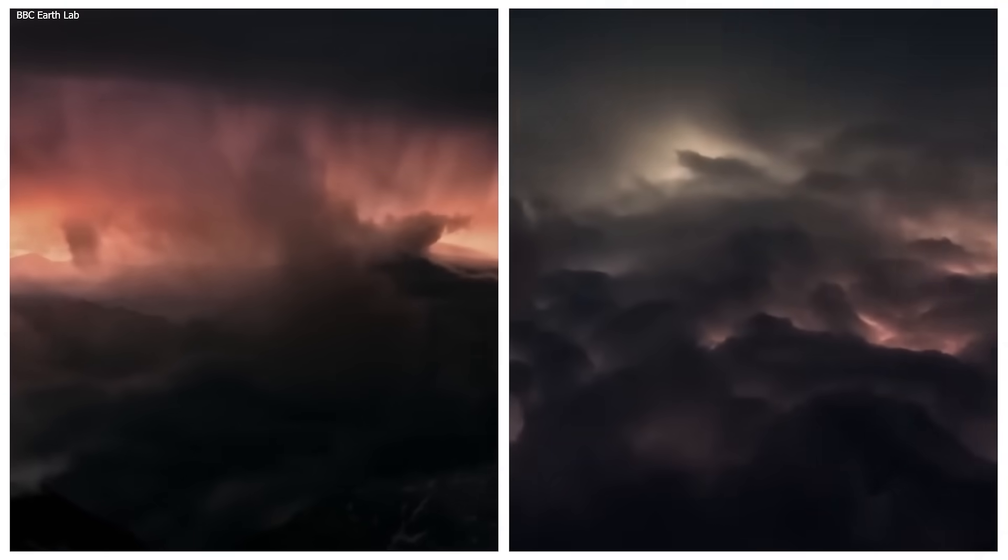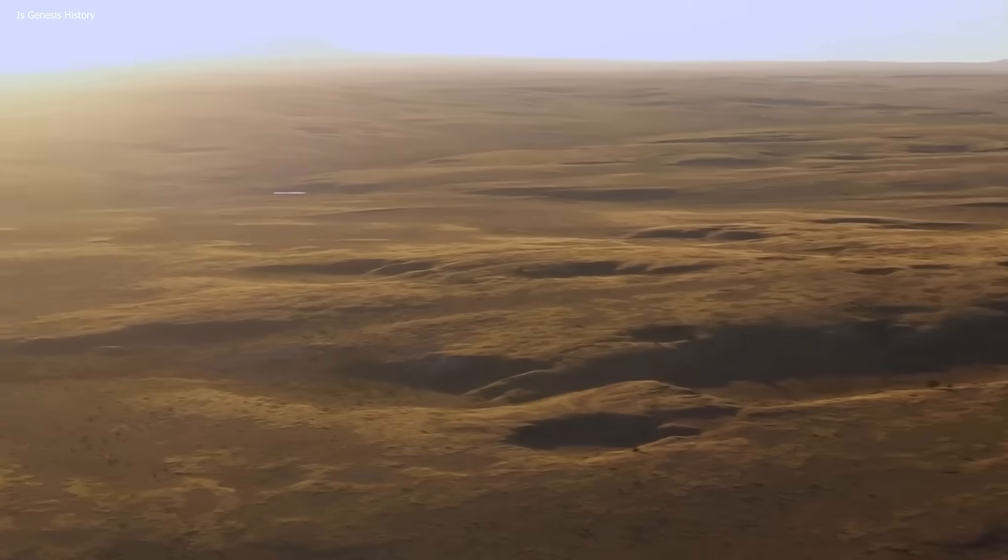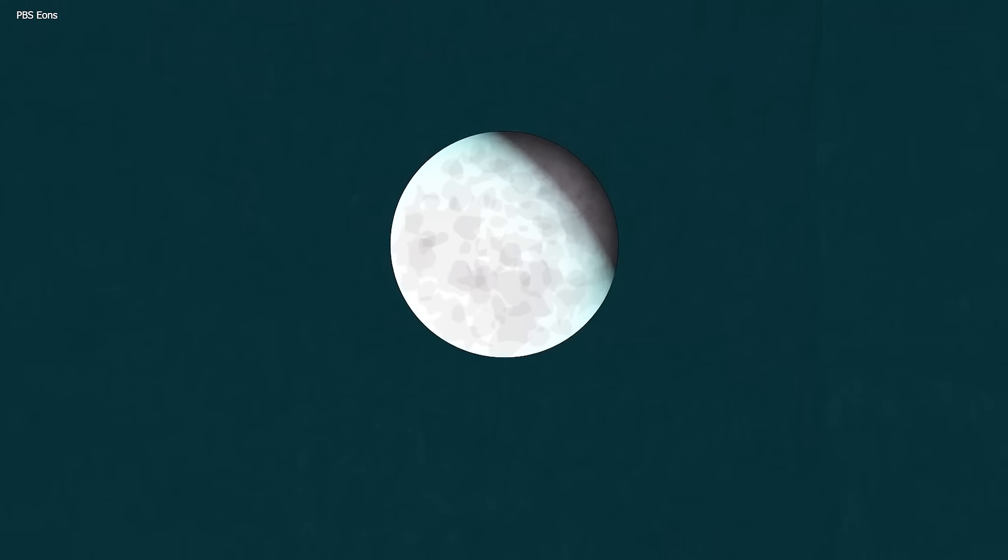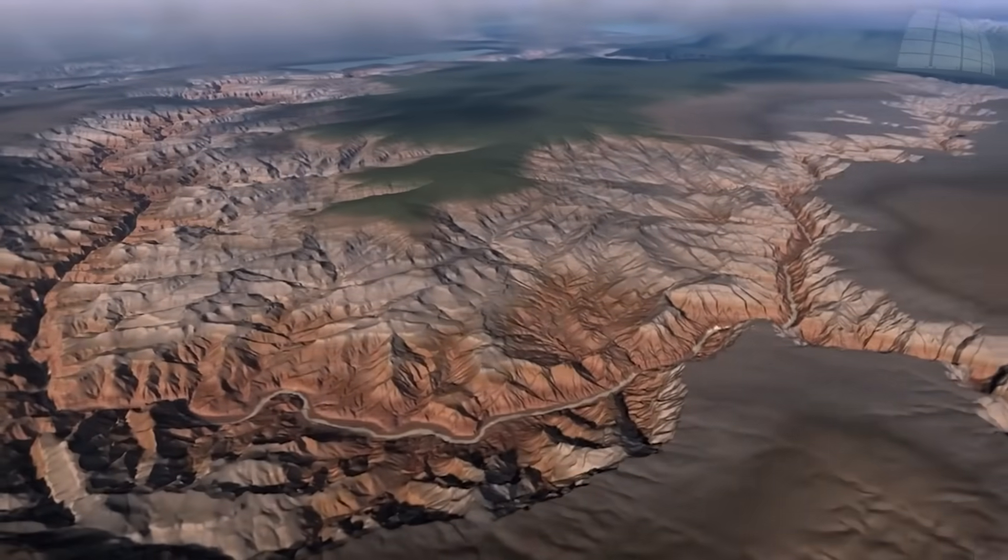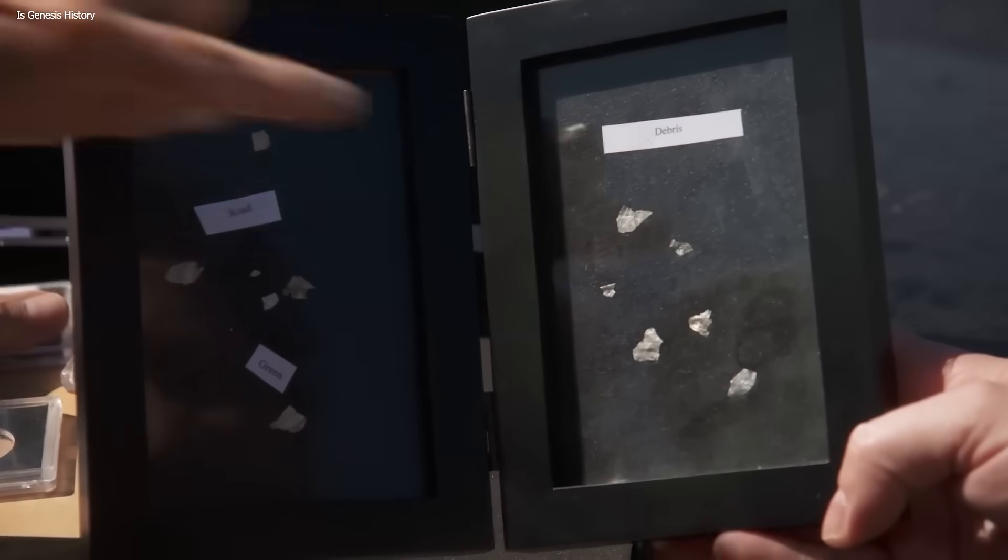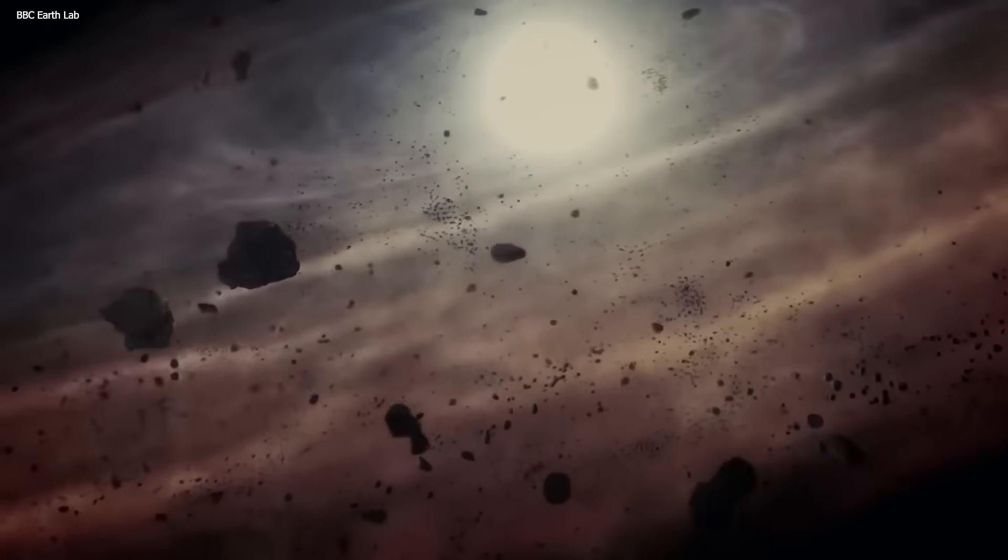So what happened during this mysterious period of earth's history? One theory is that the earth underwent a period of extreme weathering and erosion which removed almost all of the existing rock formations. Another theory is that the earth underwent a massive tectonic event which caused the existing rocks to be destroyed and new rocks to be formed.